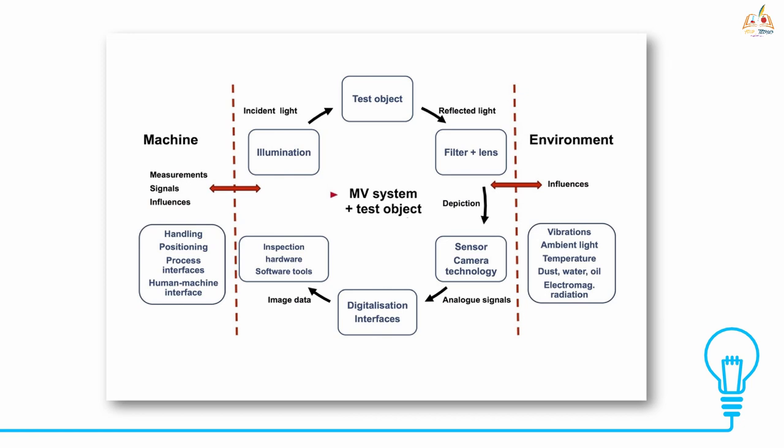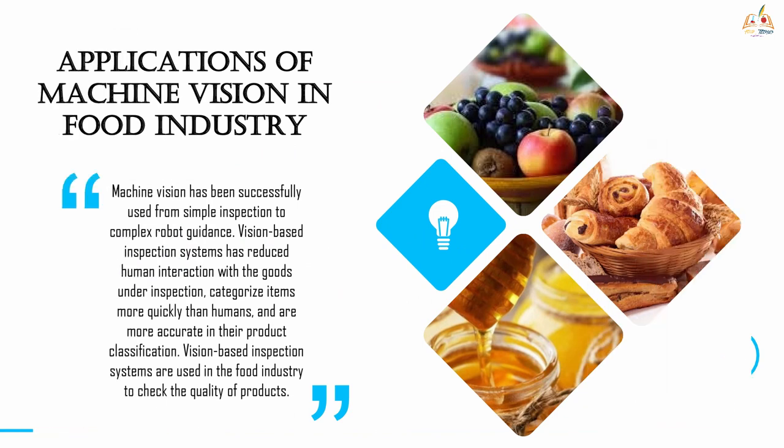The machine interacts with the MV system and causes measurement signals, influencing the handling, positioning, and process interfaces via the human-machine interface. The environment influences include electronic interference, vibrations, ambient light, temperature, dust, water, oil, and electromagnetic radiation.